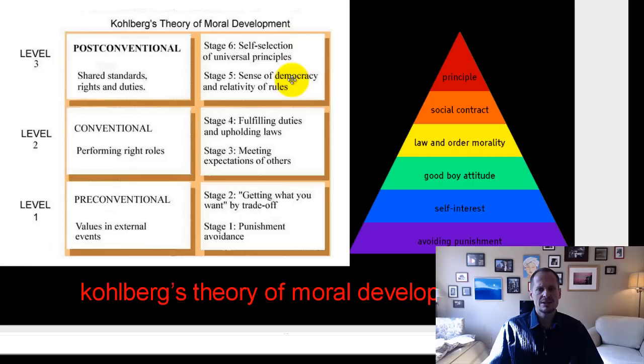A sense of democracy and social contract — this level is a little bit beyond just thinking of the rules. It's thinking: well, if everybody acted in their own self-interest, we'd have chaos. So I'm going to do what's best for all of us collectively. A lot more social orientation here.